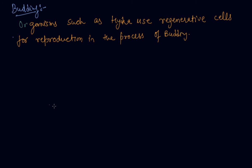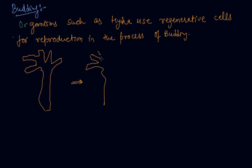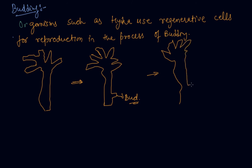Let me draw a hydra. These are the arms, so this is a hydra. A bud develops as an outgrowth. This bud develops as an outgrowth due to repeated cell division at one specific site. These buds develop and produce a similar hydra. This is called budding in hydra.